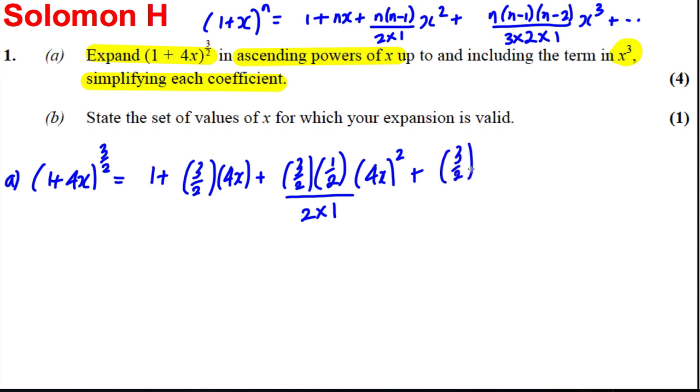3/2 multiplied by 1/2 multiplied by -1/2 all over 3 × 2 × 1 and it'll be (4x)³ plus dot dot dot. And now it's just a case of tidying these things up. So this here is going to be equal to 1 plus 3/2 times 4x is 6x. That's a nice easy term.